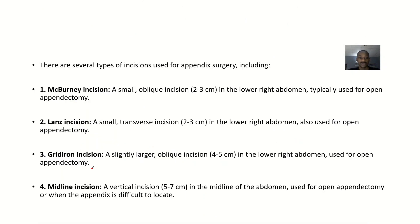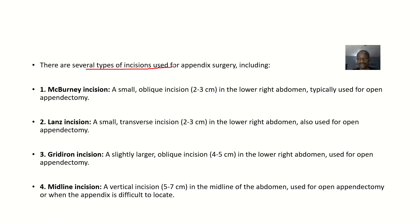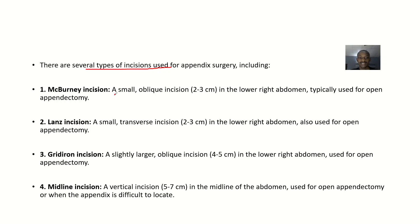There are several types of incision used for appendix surgery. First, we have the McBurney's incision. This is a small oblique incision, about 2 to 3 centimeters, incising the lower right abdomen. It is typically used for open appendectomy.